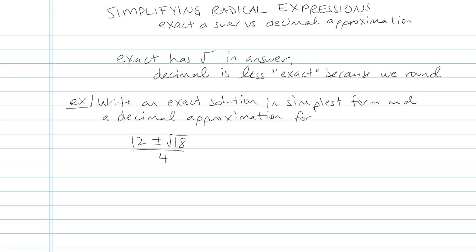We're going to be looking at what's the difference between an exact answer and a decimal approximation, particularly when you're working with radicals or square roots. The first thing is that an exact answer is going to have a radical in the answer, a square root in the answer. That's what exact means.